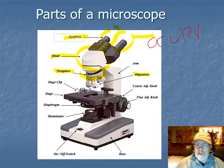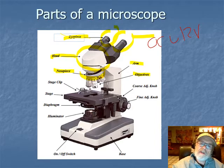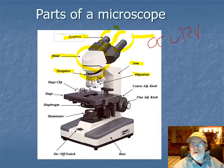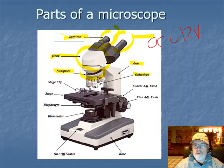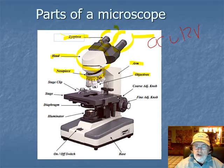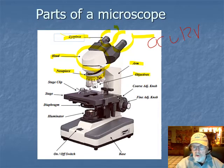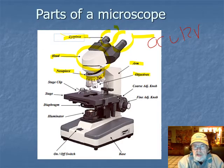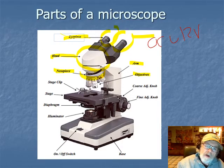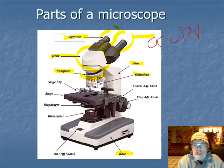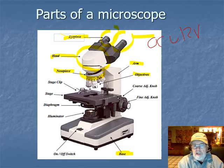This area back here is called the arm. When you carry a microscope it's always important to use two hands. You grab the microscope by the arm, lift it up, and put your hand underneath the bottom, which is called the base. You carry it holding it by the arm and under the base.